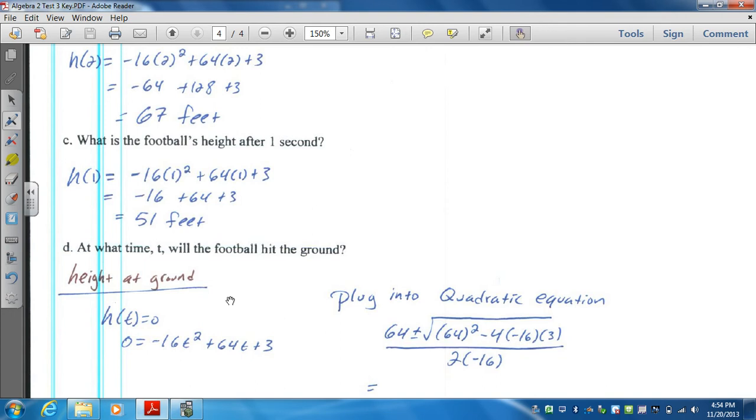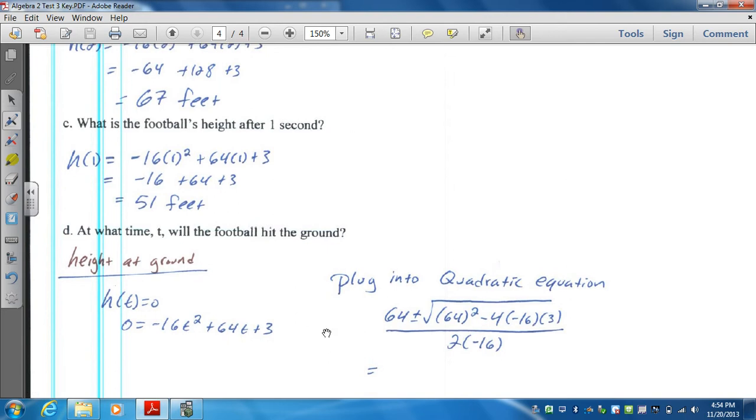At what time will the football hit the ground? The height of the football is equal to 0 when it's at the ground level. So you set your equation equal to 0. I'm going to use the quadratic formula to solve it.